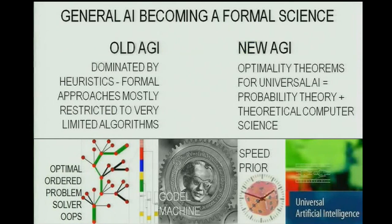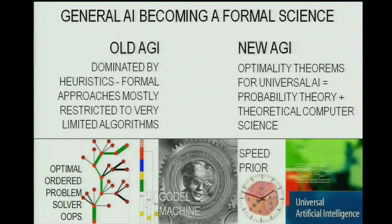AGI is driven by two types of progress, at least. On the one hand, we have these new millennium results on optimal universal problem solvers that are theoretically unbeatable and mathematically optimal.